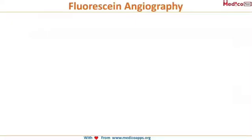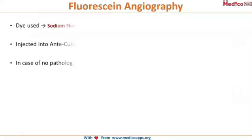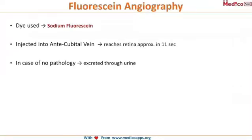Now let's look at fluorescein angiography. The dye we are going to use is called sodium fluorescein, and we inject it into the antecubital vein on the arm of the patient.